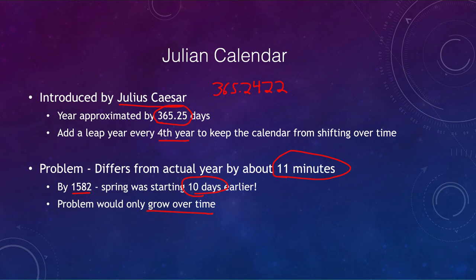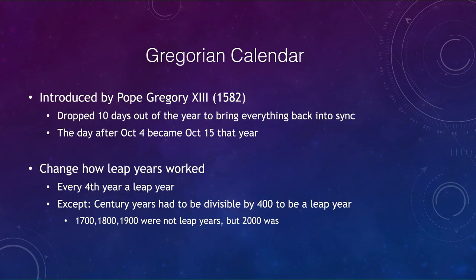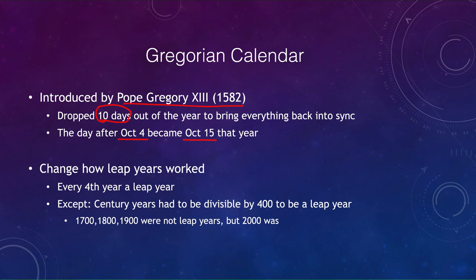This was fixed in 1582 by Pope Gregory XIII with the Gregorian calendar. First, 10 days were dropped to bring everything back into sync. It was decreed that October 4th would be followed immediately by October 15th, dropping those 10 days. However, the problem doesn't go away unless you also fix the leap year rules — otherwise, 1500 years later we'd be right back to being 10 days off.